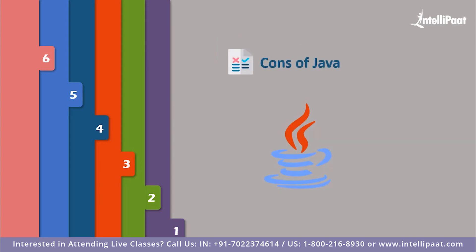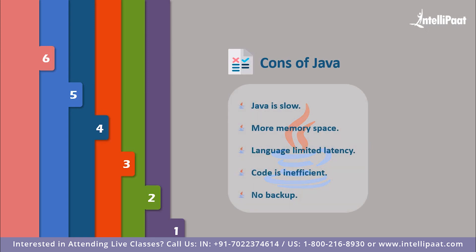Some cons that make Java less prominent: Java is comparatively slower, and one problem that always annoys programmers is that Java takes more memory space compared to other native languages like C and C++. Java also has limited latency-critical tuning — if you need to spare every millisecond, Java is not the best choice. Java's architecture code is inefficient; the method used to create portable code is inefficient. Lastly, Java doesn't guarantee backup — it is mainly focused on storage and is less efficient for data backup, which affects its rating.